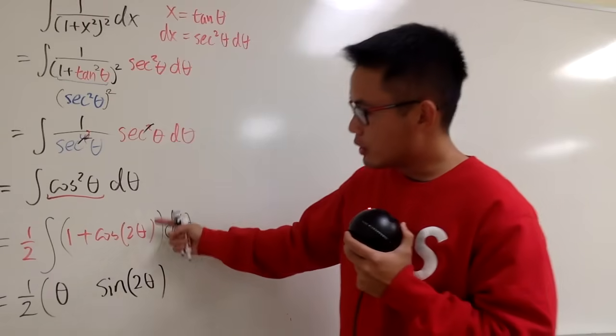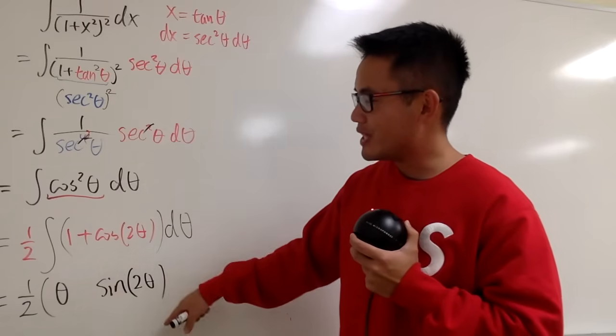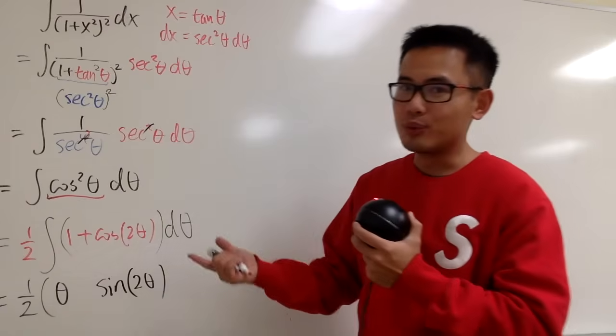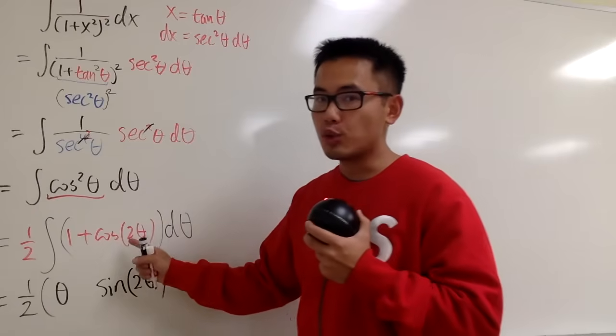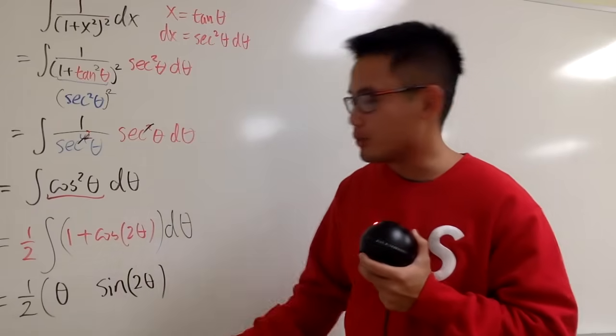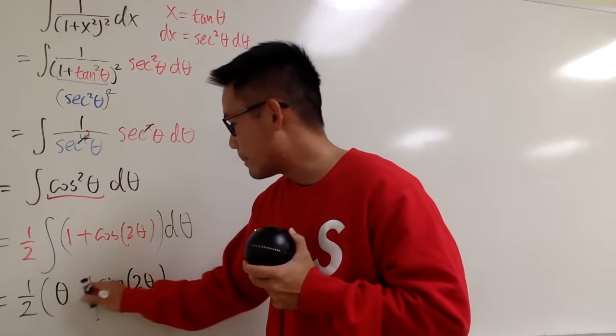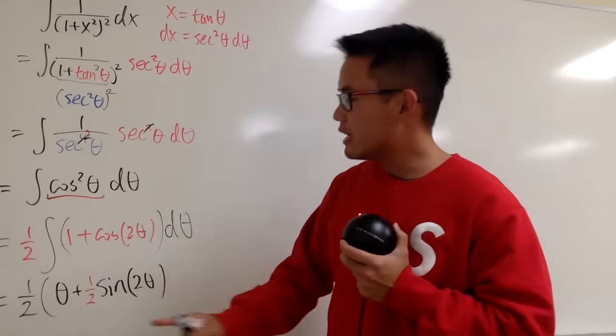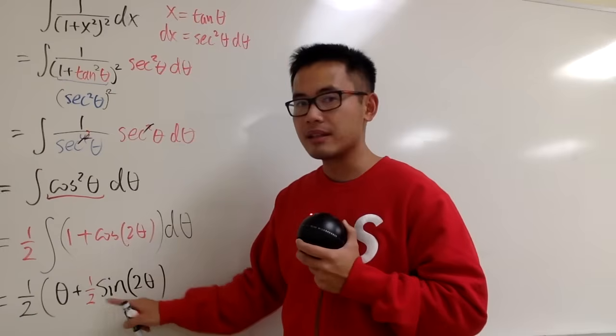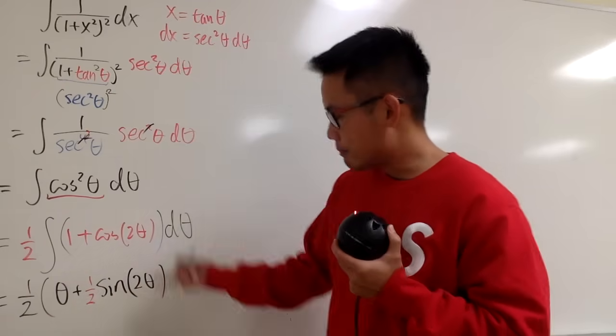But when we go to the anti-derivative, we have to do the chain rule backwards. Namely, we have to divide by the derivative inside. The derivative of 2 theta is 2. Divided by 2 is the same as saying, we multiply by 1 half right here. And the sine stays.